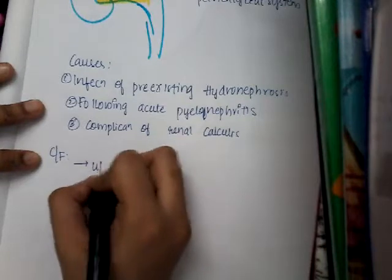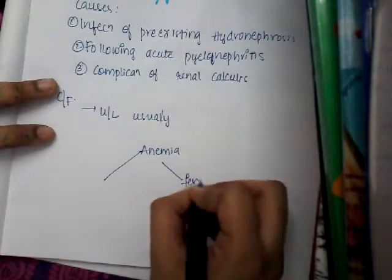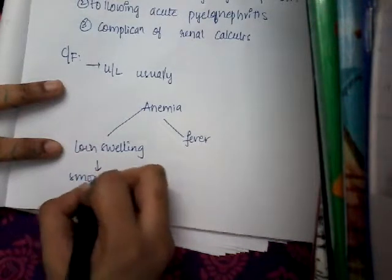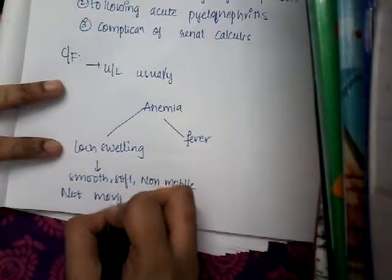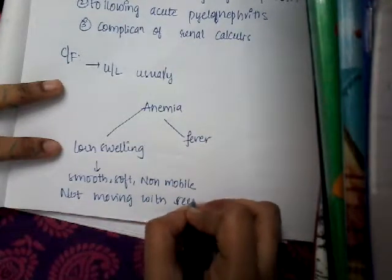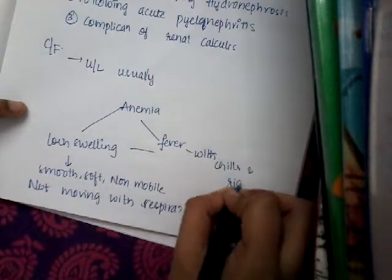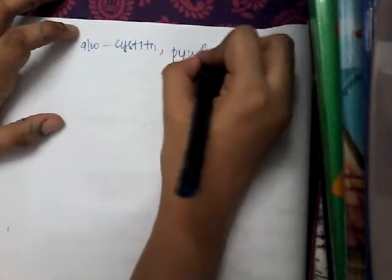What are the clinical features? This usually occurs unilaterally. It has a triad: number one, anemia; then there may be fever; and there may be loin swelling. This loin swelling is smooth, soft, non-mobile, and not moving with respiration. The patient may have fever with chills and rigors. Pyonephrosis may also be associated with cystitis, pyuria, and burning micturition.